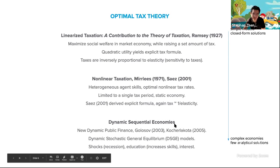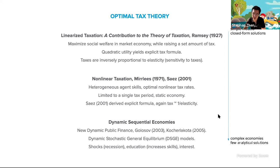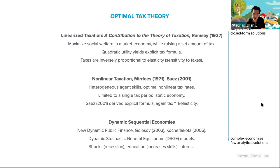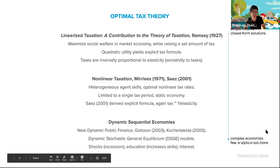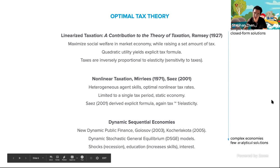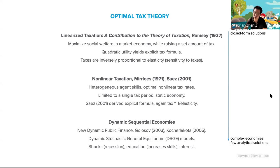Very recently, in the past 10-20 years in economics, people have also started looking at dynamic sequential economies. In particular, the new dynamic public finance by Golissov and Kukla Kota considers the sequential setting, which is closer to the MDP setting in RL. There are also dynamic stochastic general equilibrium models which look at shocks like recessions or education effects, investing, and interest rates. The broad trend is that in 1927, people had simple models with closed-form solutions, but in dynamic sequential settings for complex economies, there are very few analytical solutions. This is where we try to use reinforcement learning instead for a data-driven solution.